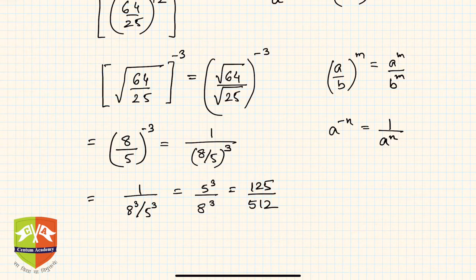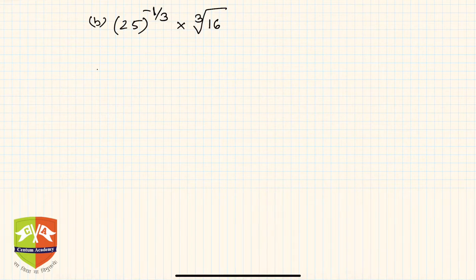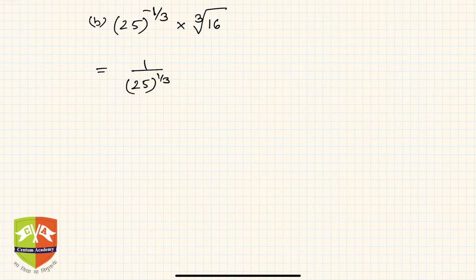Now let us see the second question. The second question is 25 to the power minus 1 upon 3 into the third root of 16. So 25 to the power minus 1 by 3 can be written as 1 by 25 to the power 1 by 3, and the third root of 16 is 16 to the power 1 by 3.